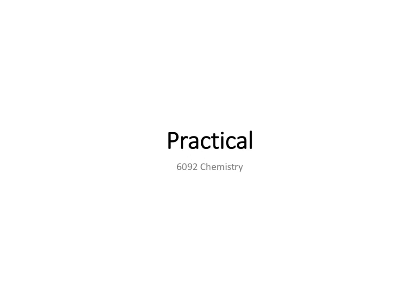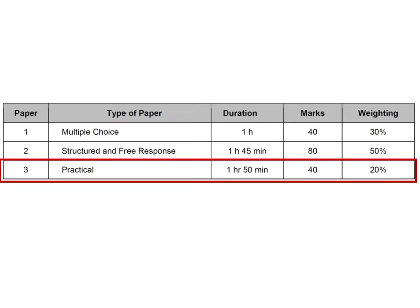In this video we're going to do a revision for the end of course practical exam. The exam has a duration of one hour 50 minutes, there are 40 marks in total, which carries a weightage of 20 percent. In this one hour 50 minutes, the paper usually consists of two to three experiments followed by a planning question.